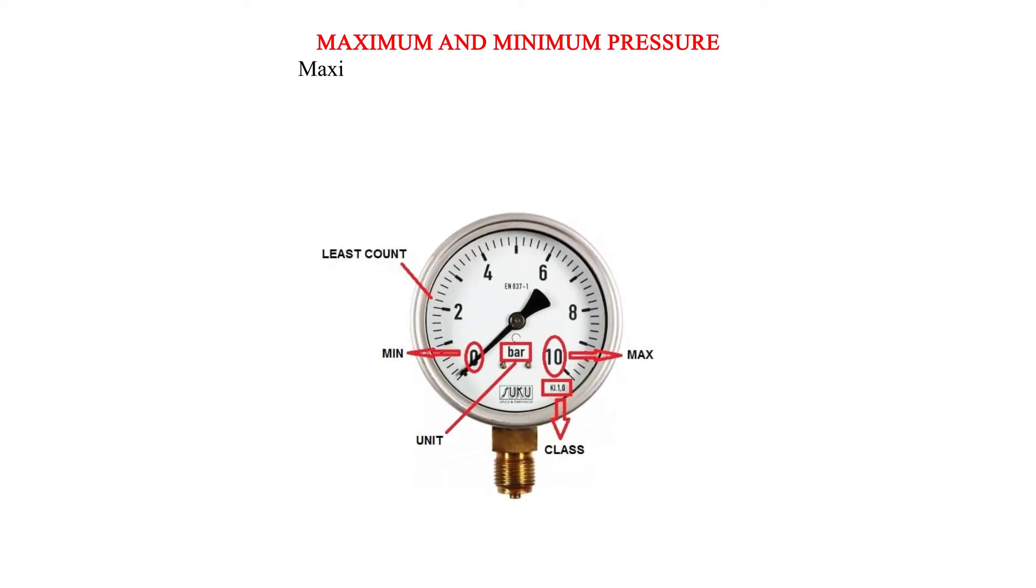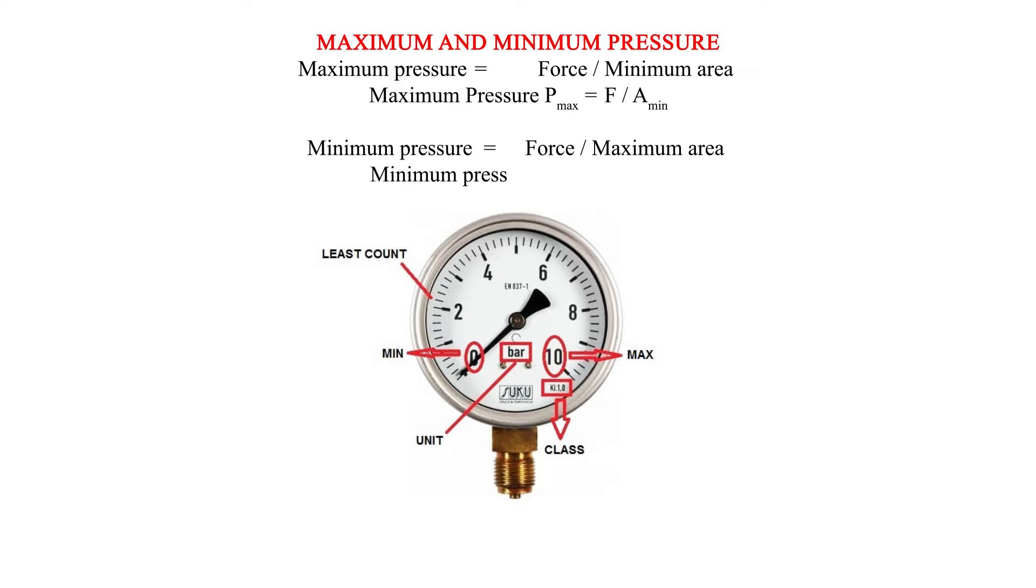Maximum and minimum pressure. Maximum pressure equals force over minimum area. Maximum pressure P max equals F over A min. Minimum pressure equals force over maximum area. Minimum pressure P min equals F over A max.